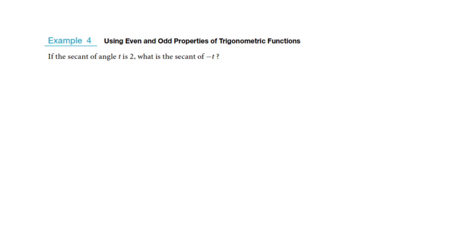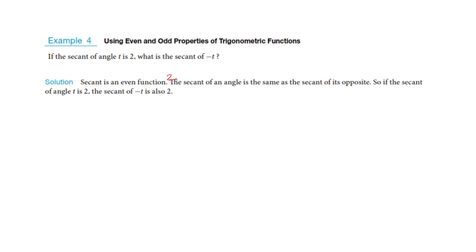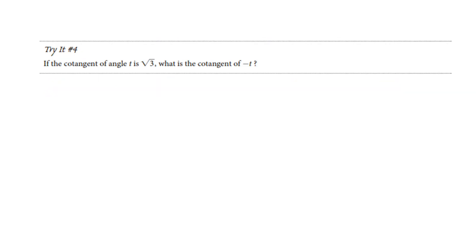This was in an earlier slide, but if we know secant of t equals 2, then if we put a negative t in there, what happens? Well, secant is based on cosine, so it wouldn't matter — you would still get 2. We saw these in earlier ones, but here's a quick refresher.